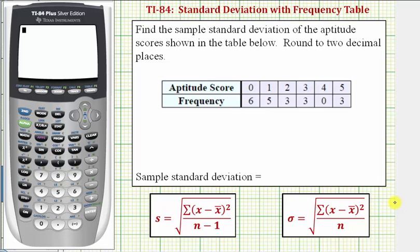Welcome to an example on how to use the one variable stat tool on the TI-84 to determine standard deviation when the data is given in a frequency table. In this example we're asked to find the sample standard deviation of the aptitude scores shown below in the table, and we're asked to round to two decimal places.